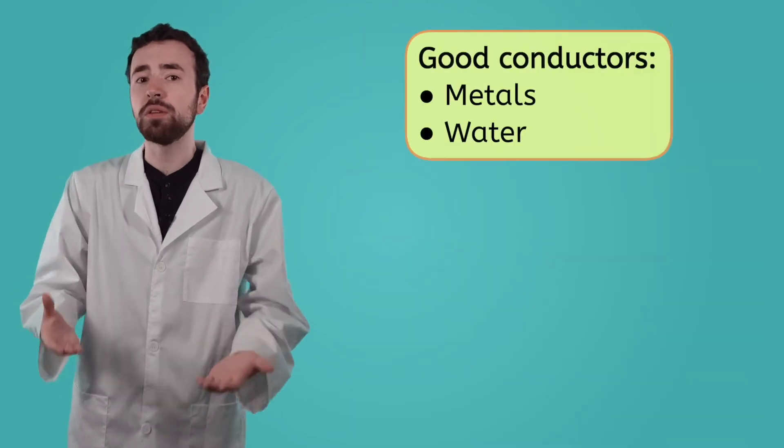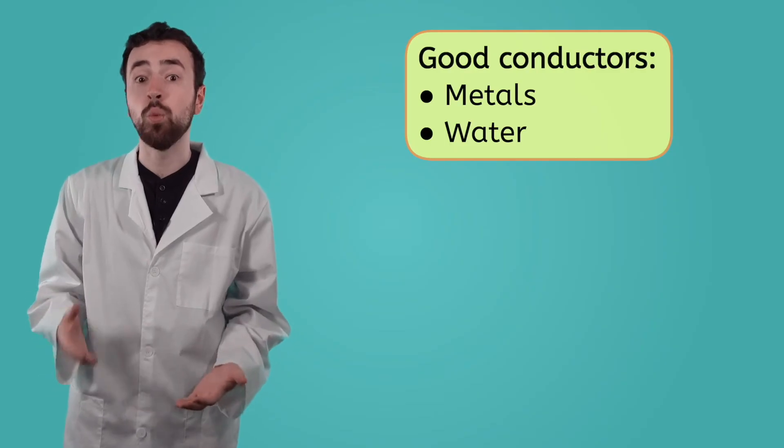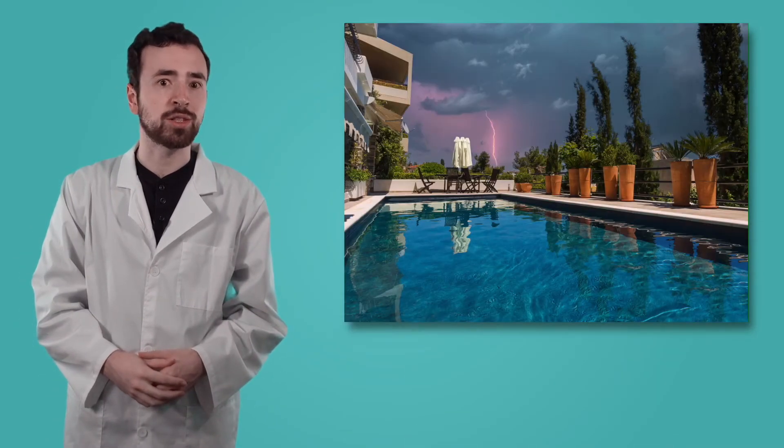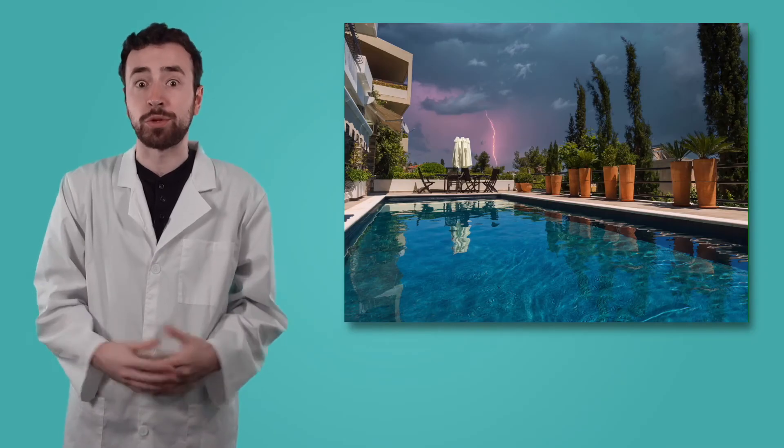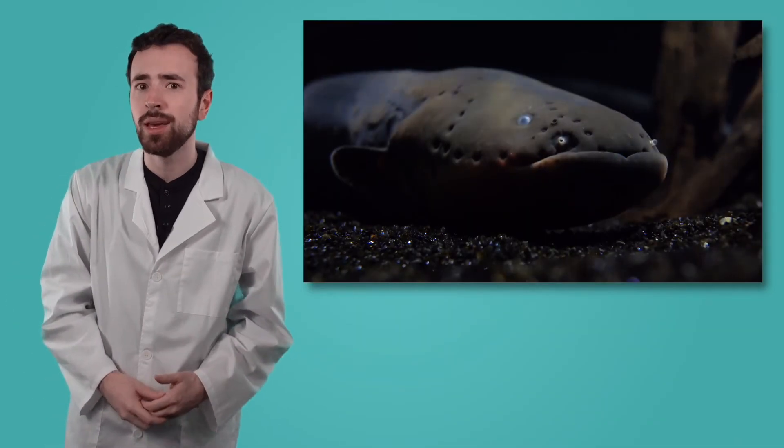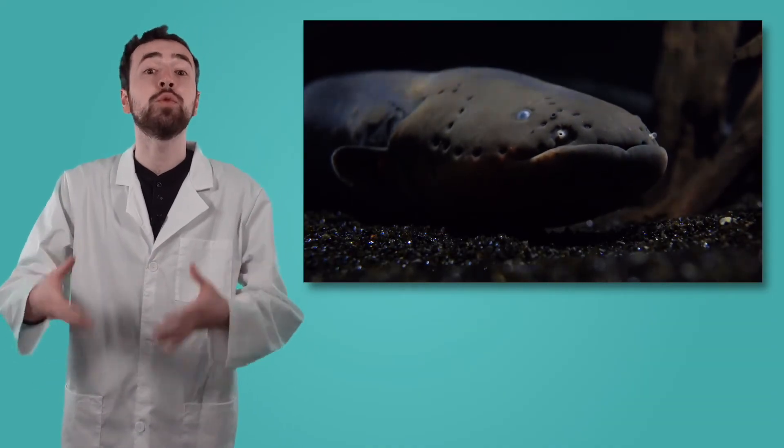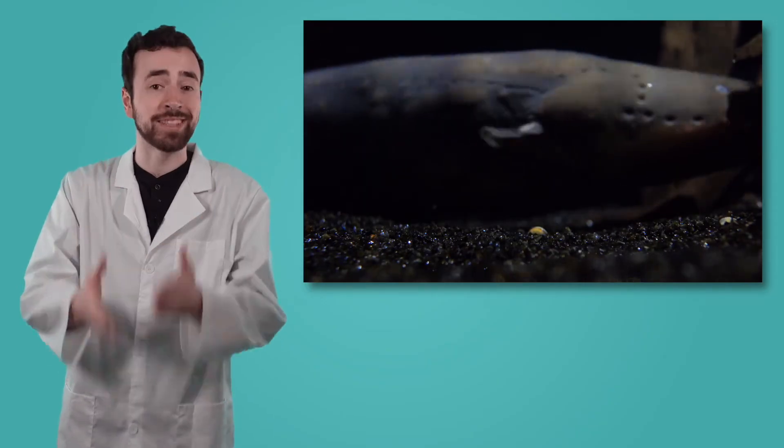Metal isn't the only material that makes a good conductor, though. Water is an excellent conductor of electricity, which is why you should never swim when there's a thunderstorm, and why the shock of an electric eel is particularly powerful. The flow of electrons is able to move quickly through a conductor.